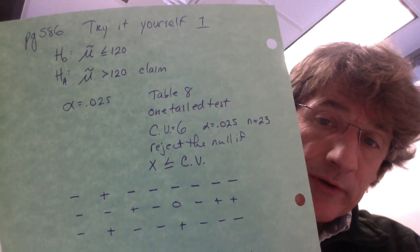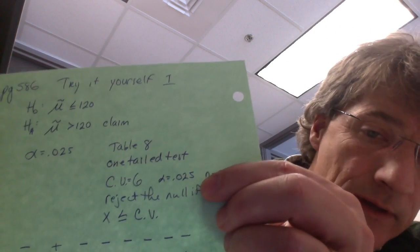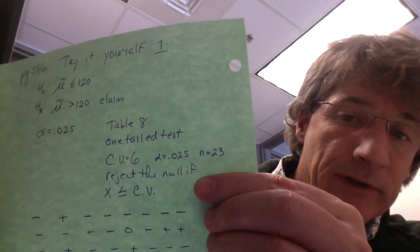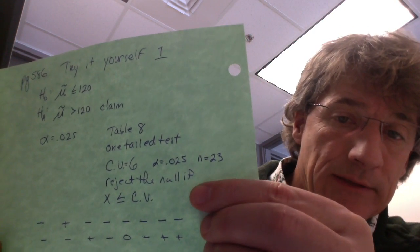And our alpha is 0.025, so I'm talking about right here. Now, when you look it up on table 8, you'll find that your critical value is 6.